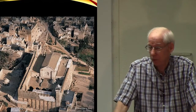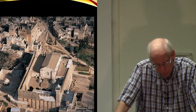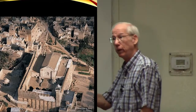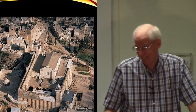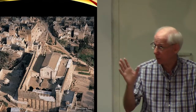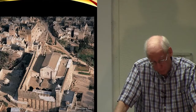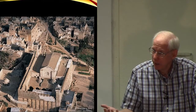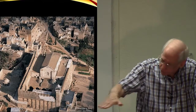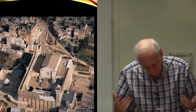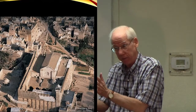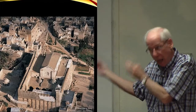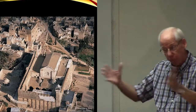The underground chambers where the patriarchal figures would have been entombed have received very little investigation. The first recorded exploration of the cave was done by Augustinian monks in 1119. Then in 1967, after the Six-Day War, the Israeli Moshe Dayan lowered a 12-year-old girl with a flashlight into the underground chamber. She recorded an arrangement very similar to what the monks had described in the 12th century. But that's essentially all we know — this is most likely the cave of Machpelah.